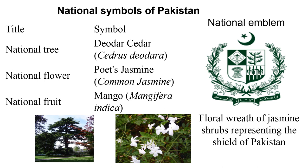Let's discuss the national symbols of Pakistan. Cedar is the national tree of Pakistan. Jasmine is the national flower. Mango is the national fruit. If you look at the emblem of Pakistan, a shield is surrounded by a floral wreath of jasmine, and the shield depicts the four major crops of Pakistan: cotton, jute, tea, and wheat. This is all about today's lecture. If you have any questions, we will discuss them in our question and answer session. Thank you.